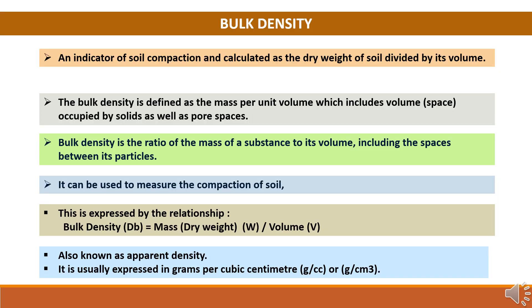Bulk density is an indicator of soil compaction and is calculated as the dry weight of soil divided by its volume. Bulk density is defined as the mass per unit volume, which includes the volume space occupied by solids as well as pore spaces. It is the ratio of the mass of a substance to its volume including the space between the particles.